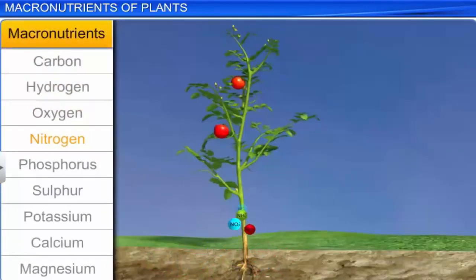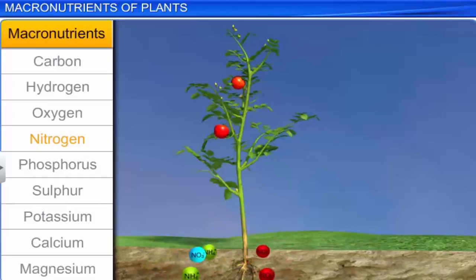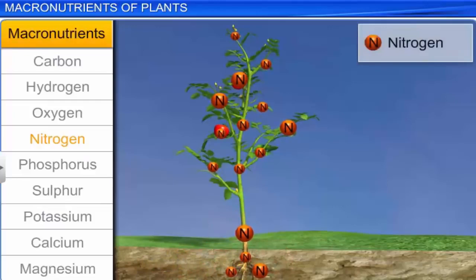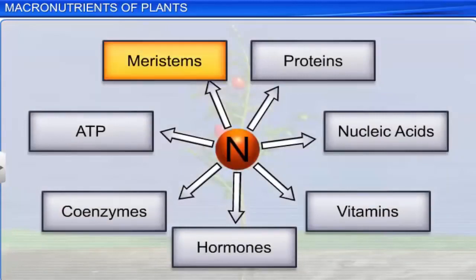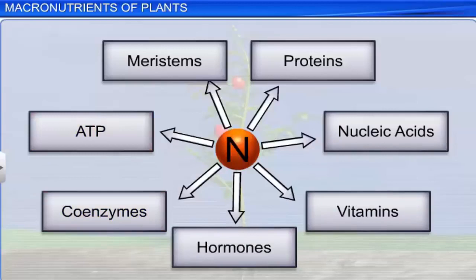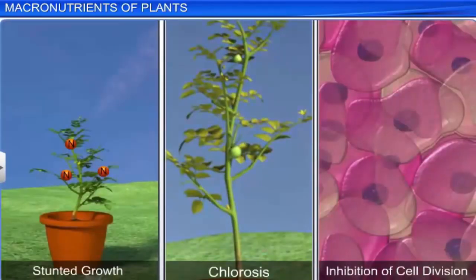Nitrogen, the other important macronutrient, is obtained from soil either in the form of nitrate, nitrite, or ammonium salts. Nitrogen is required in all parts of a plant's body. It is mainly found in meristematic tissues and biomolecules like proteins, nucleic acids, vitamins, hormones, coenzymes, and ATP. The deficiency of these elements leads to symptoms like stunted growth, chlorosis, and inhibition of cell division.